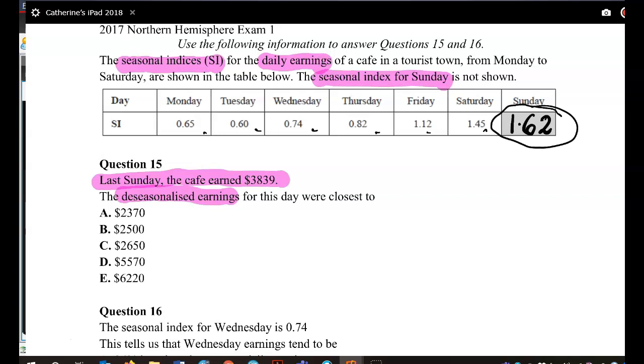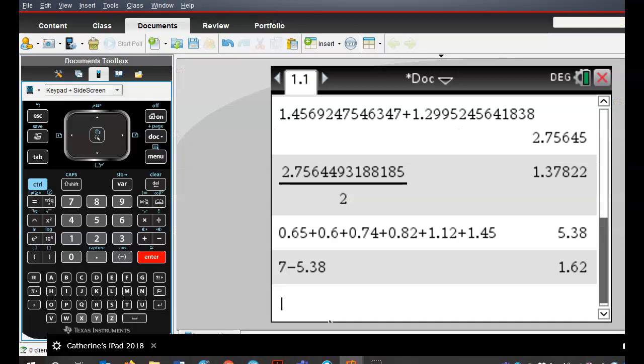Okay, so that's part of what we have to do. The next part is to find the de-seasonalized earnings. If you remember, de-seasonalized is equal to the actual divided by the seasonal index. So here, our actual was 3,839. So we have to divide that by our seasonal index, which is 1.62.